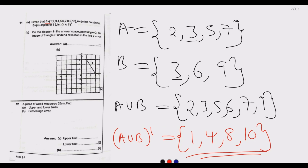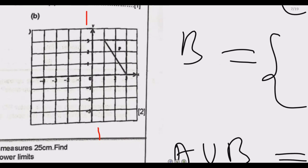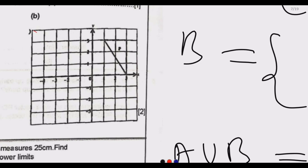Let's identify triangle P. The line of reflection y equals negative x passes through the origin and is a straight line. For a reflection, each point of the image must be the same distance from the line of reflection as the corresponding point of the original triangle.